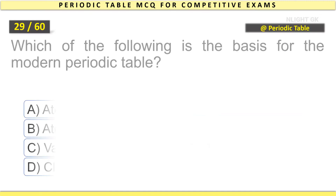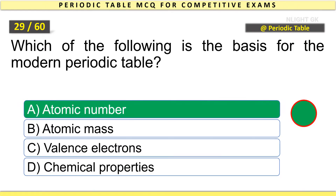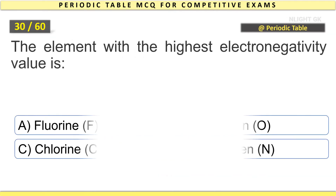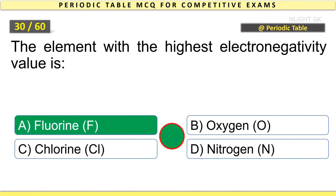Which of the following is the basis for the modern periodic table? Atomic number. The element with the highest electronegativity value is Fluorine.